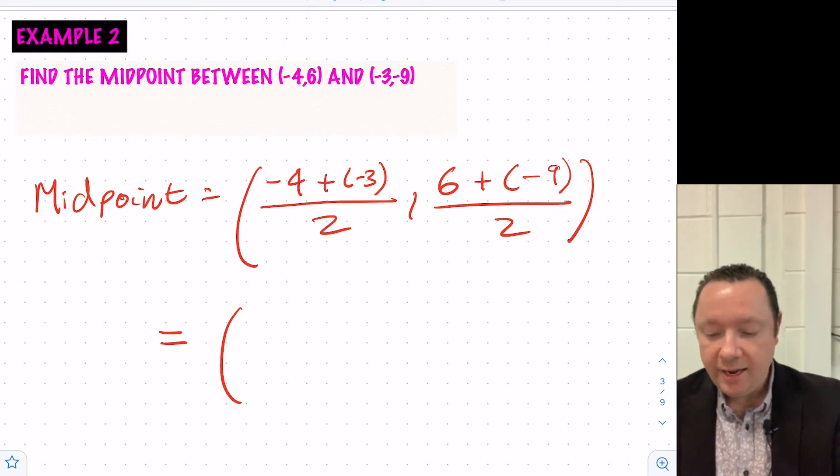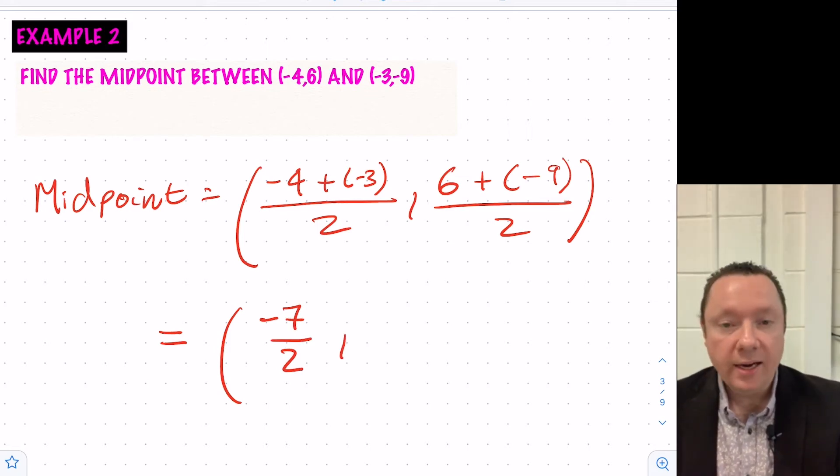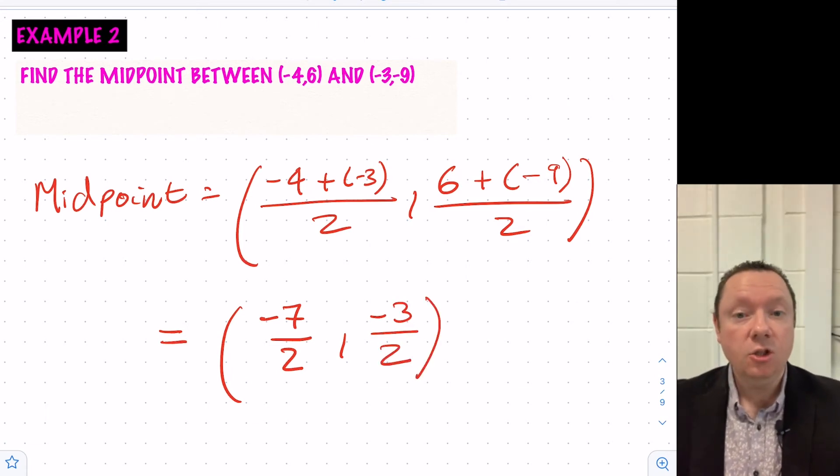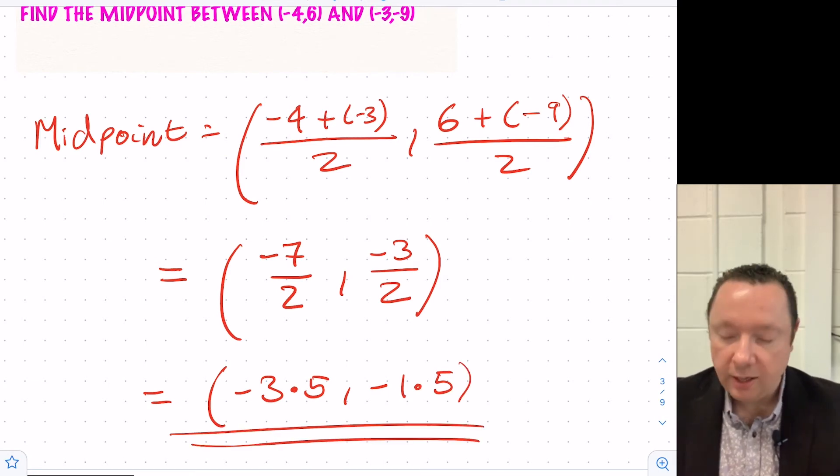Minus 4, take away 3 is minus 7. So I've got minus 7 over 2. And 6, take away 9, is minus 3. So I get minus 3 over 2. Now, they are both simplified fractions, so you could in theory just leave them as simplified fractions. Or if you prefer decimals, 7 divided by 2 is 3.5, so minus 3.5. And 3 divided by 2 is 1.5, so minus 1.5. And there we go, our final answer.